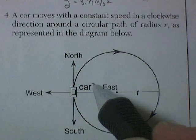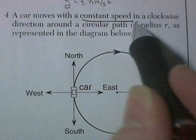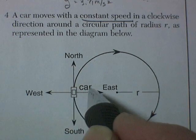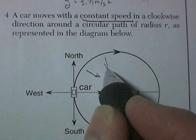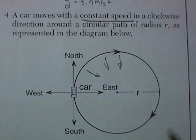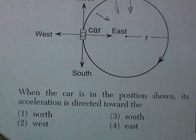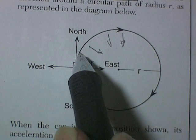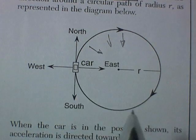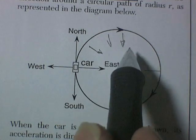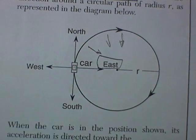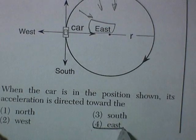Question 4: a car moving in a circular path at constant speed in the clockwise direction as shown in the diagram. It's changing direction as it turns. When the car is in the position shown, where is acceleration directed? It's maintaining constant speed but changing direction, so it's accelerating inward — centripetal acceleration. In this particular position, inward refers to east. The correct answer is east.